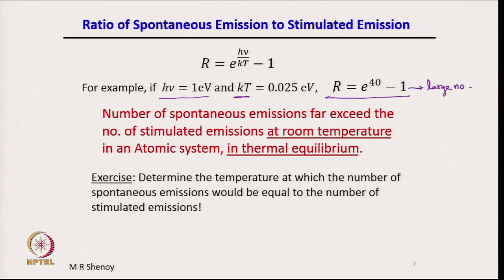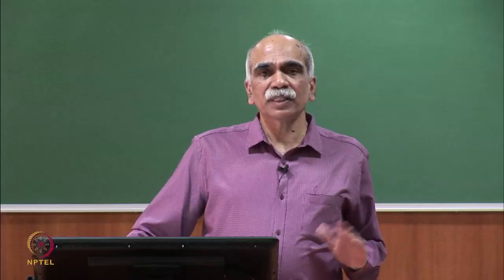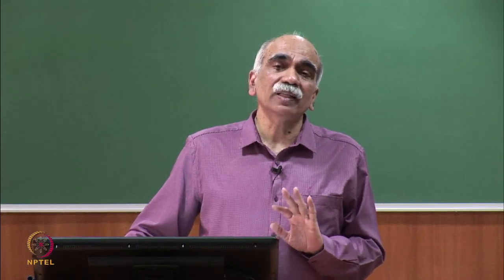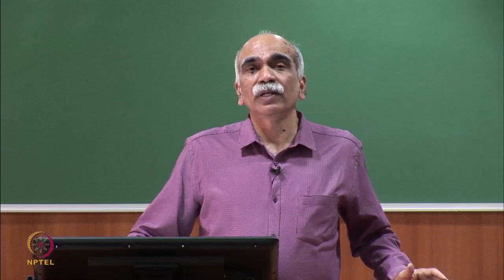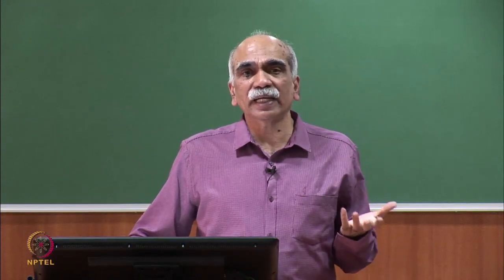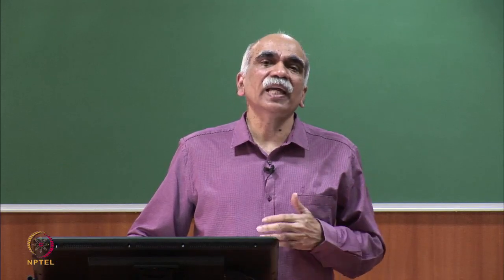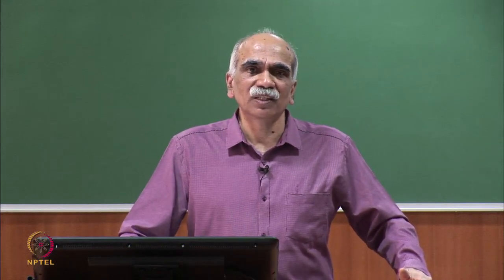R is the ratio of spontaneous emission to stimulated emission at thermal equilibrium. This means spontaneous emissions far exceed stimulated emissions at room temperature for an atomic system in thermal equilibrium. When external pumping or excitation is applied, it is possible to reverse this, achieving more stimulated emissions than spontaneous — as is the case in a laser.